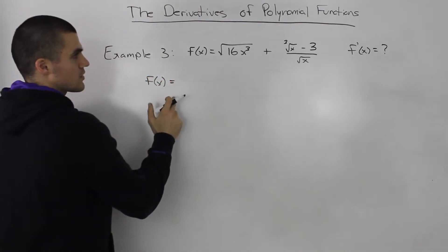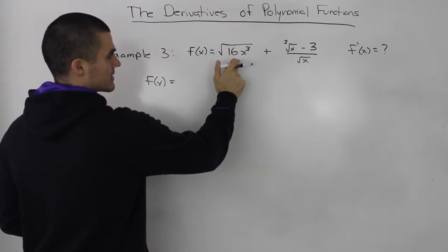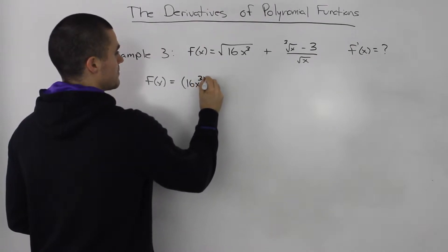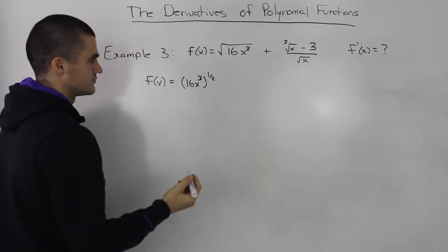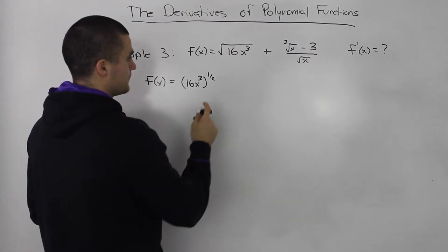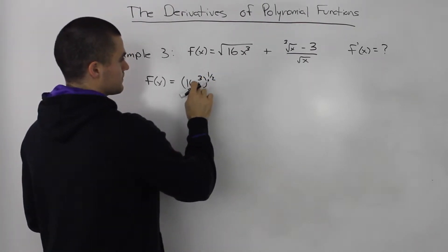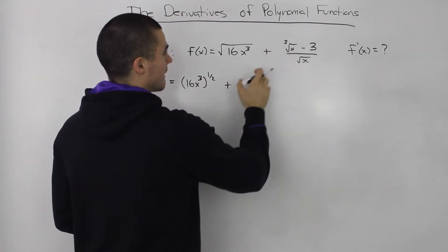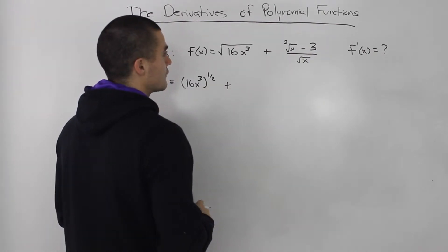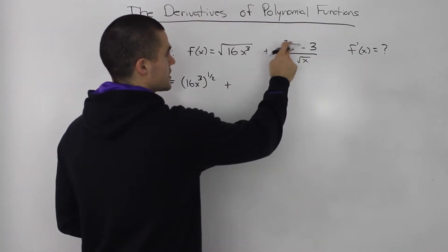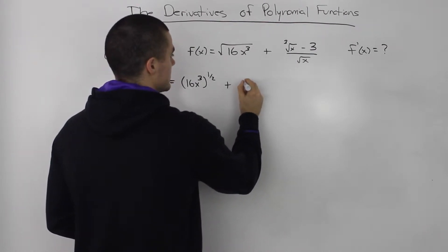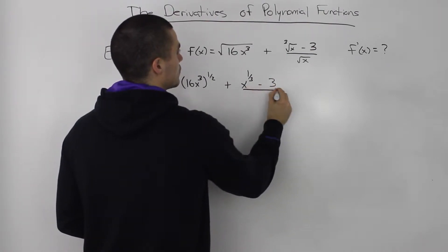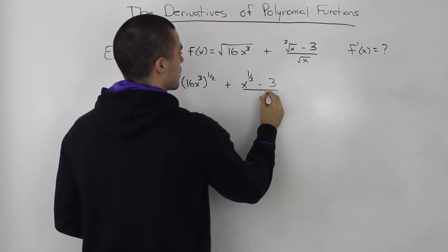Let's start rewriting this. The square root of 16x cubed is the same as 16x cubed to the power of 1 over 2, because anything to the power of 1 over 2 is just that thing rooted. Let's change these radicals to have rational exponents: the cubed root of x is the same as x to the power of 1 over 3, minus 3, all over the square root of x, which we rewrite as x to the power of 1 half.